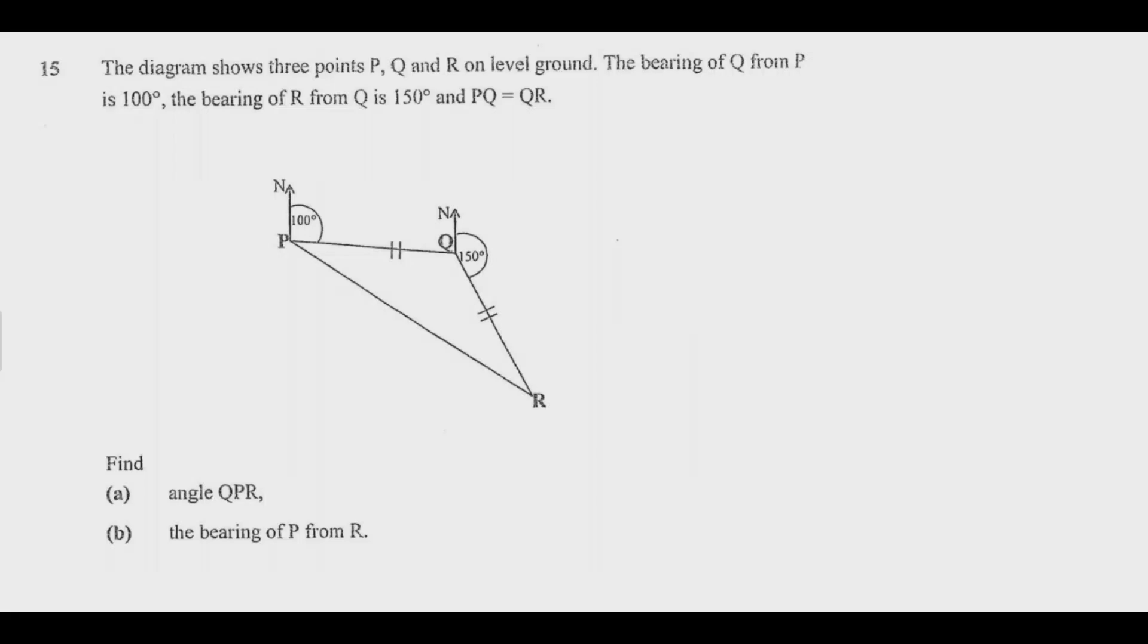Question 15: The diagram shows three points P, Q, and R on level ground. The bearing of Q from P is 100 degrees, the bearing of R from Q is 150 degrees, and PQ equals QR. Find angle QPR.